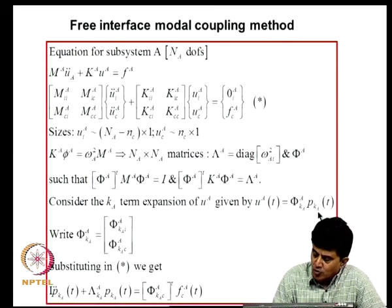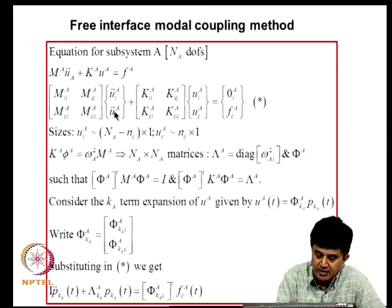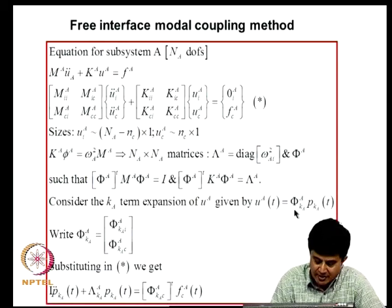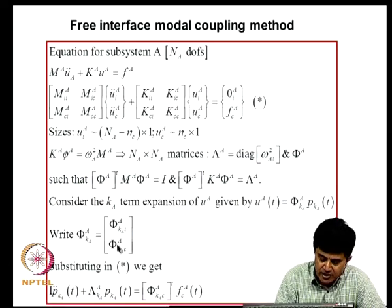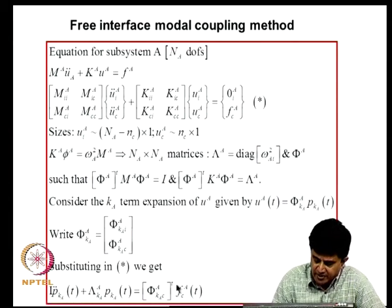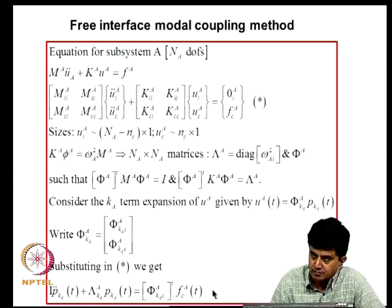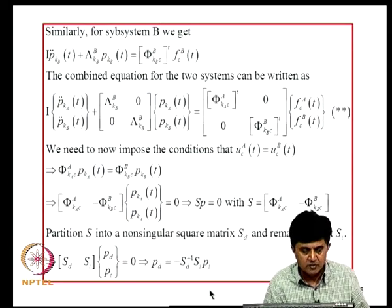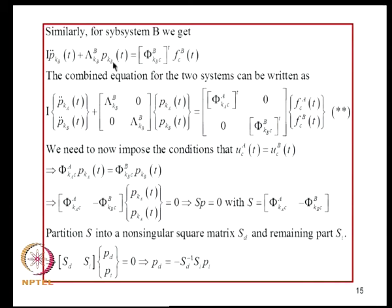Partitioning U into interior and coupling degrees of freedom induces a corresponding partitioning of the modal matrix. Substituting and using orthogonality relations, we get the equation for subsystem A in reduced form. Similarly, for subsystem B using the same logic, we get the corresponding equation, where Lambda^B represents the natural frequencies of subsystem B with the free interface, and Phi_K^B is the corresponding modal matrix.